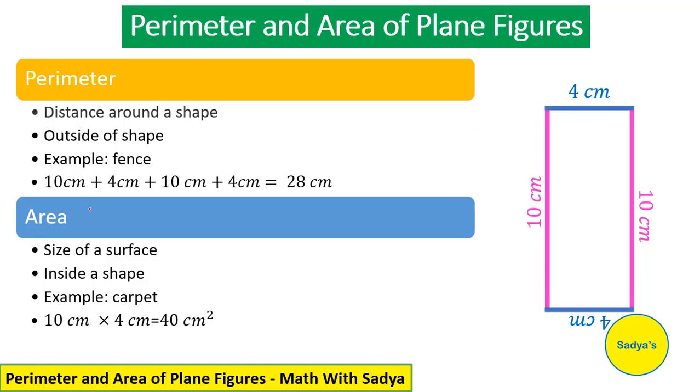Now let's see what area is. Area is the size of the surface. How much space this figure has taken? It is inside a shape. For example, if you have a room in which you have to put a carpet, how much carpet would you need? It means that you will find the area of your room.